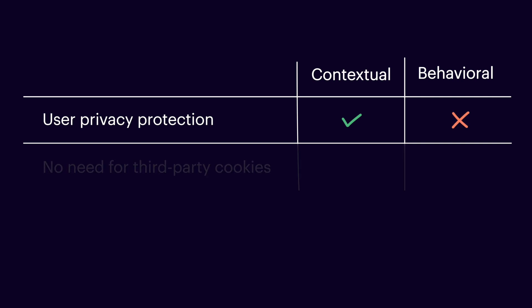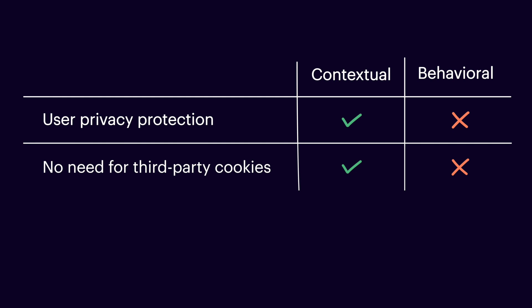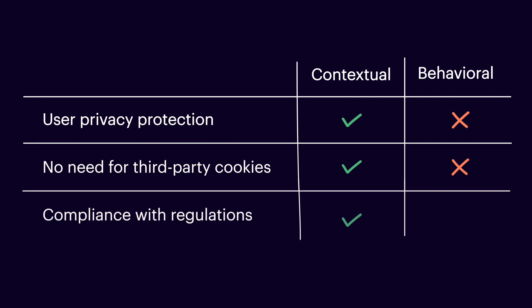Contextual targeting doesn't use third-party cookies and will easily survive their phase-out, while behavioral targeting will be very much affected by it. Contextual targeting does not violate user privacy, while behavioral targeting in many cases can be considered very intrusive. As you can see, contextual targeting is perfect for future-proof, privacy-first advertising, and this brings it back on the agenda for media buyers today.